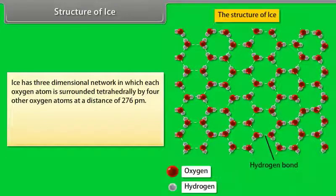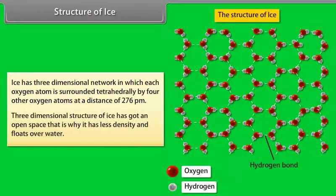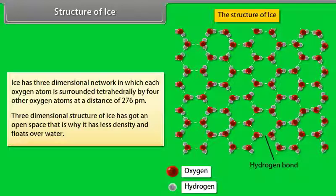Structure of ice: Ice has a three-dimensional network in which each oxygen atom is surrounded tetrahedrally by four other oxygen atoms at a distance of 276 picometers. The three-dimensional structure of ice has an open space. That is why it has less density and floats over water.